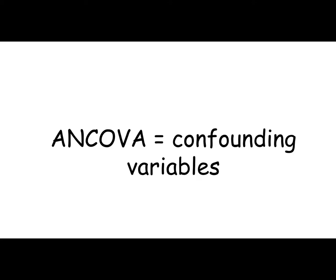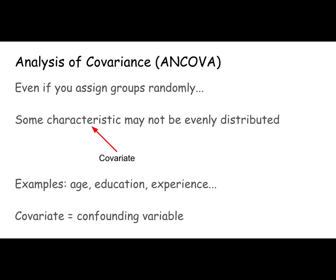I want to briefly discuss what ANCOVA and MANOVA mean. ANCOVA is used to accommodate confounding variables. When we discussed random group assignment, we touched on the idea that even randomly assigned groups might have some characteristic that is not evenly distributed. This uneven characteristic is a confounding variable, or covariate.